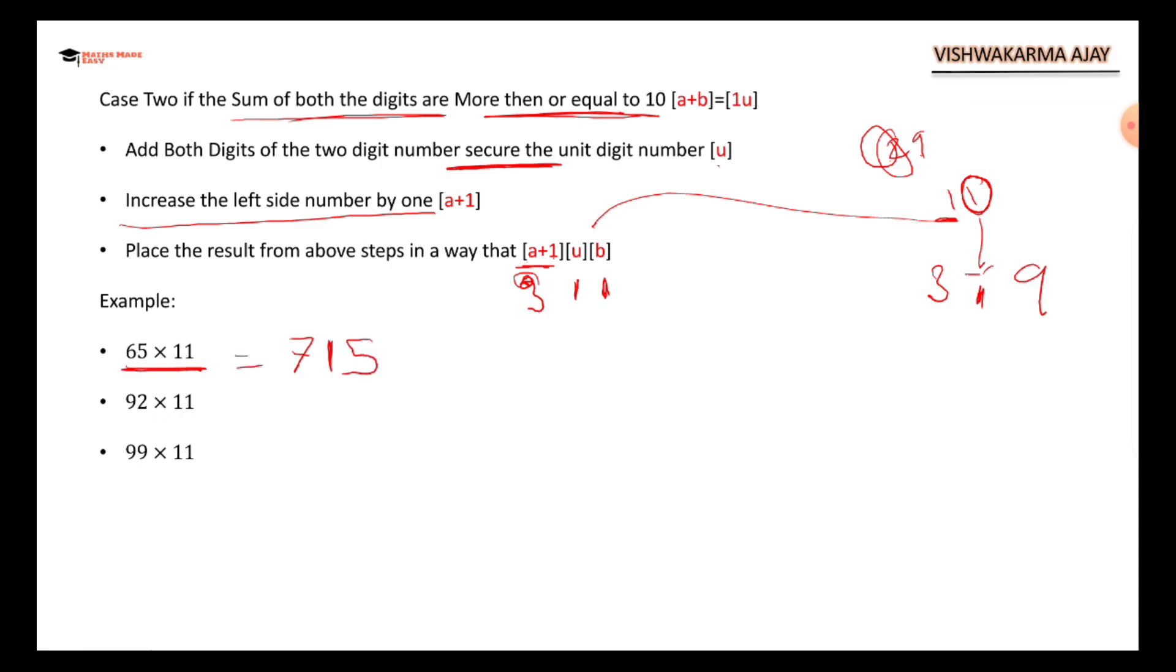92 times 11. 9 plus 2 is also 11. 9, I have to add 1. 9 plus 1 is 10. 11 and 2.